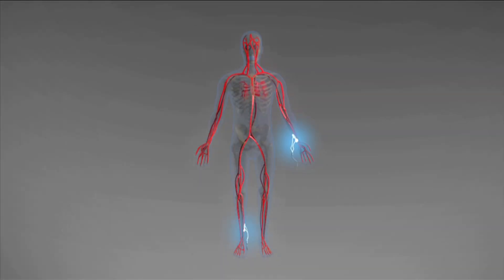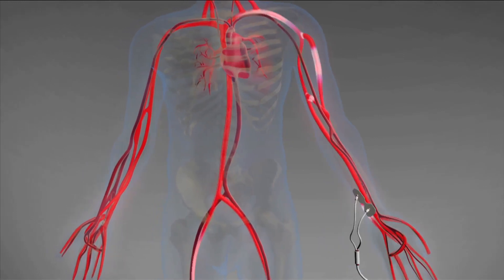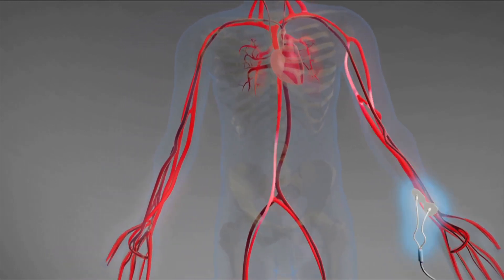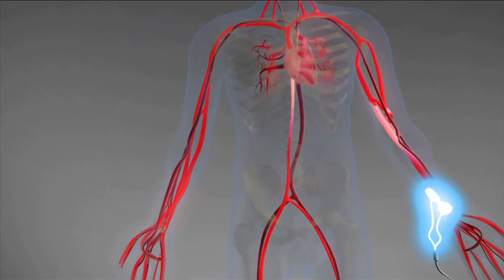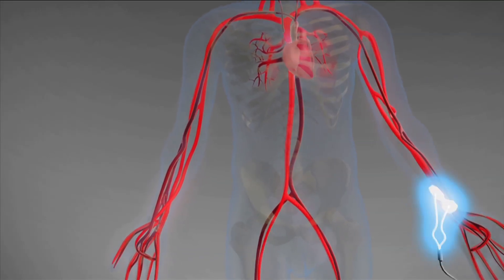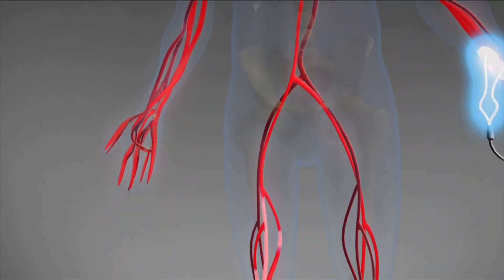These electrical signals are imperceptible to the patient. Because the electrical signals seek the path of least resistance, the majority of the signals flow through the blood in the arterial system.